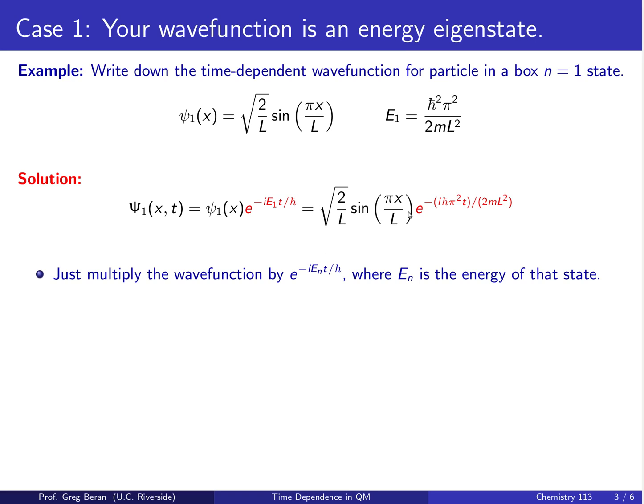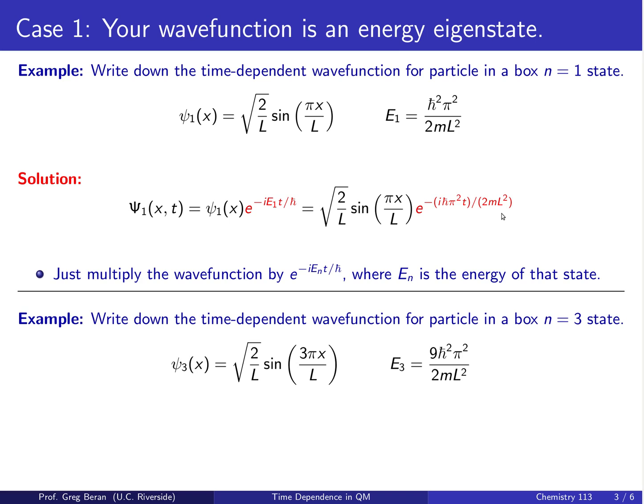So we take our ψ₁ and multiply it by e to the minus i E₁t over h-bar. You'll notice I ended up canceling one of the h-bars in the numerator with the one in the denominator. So that's all there is to it. This is our time-dependent wave function.